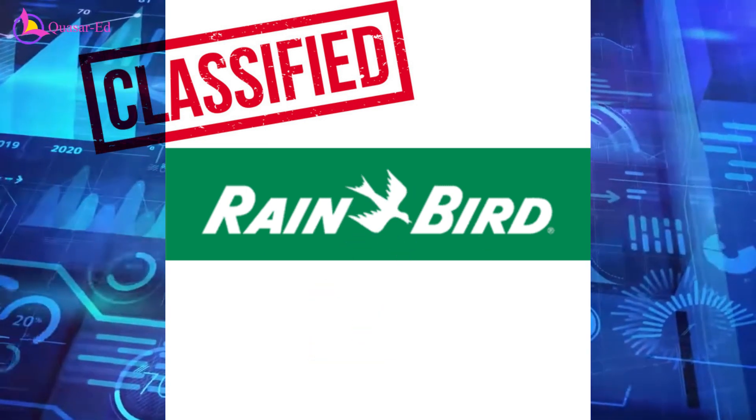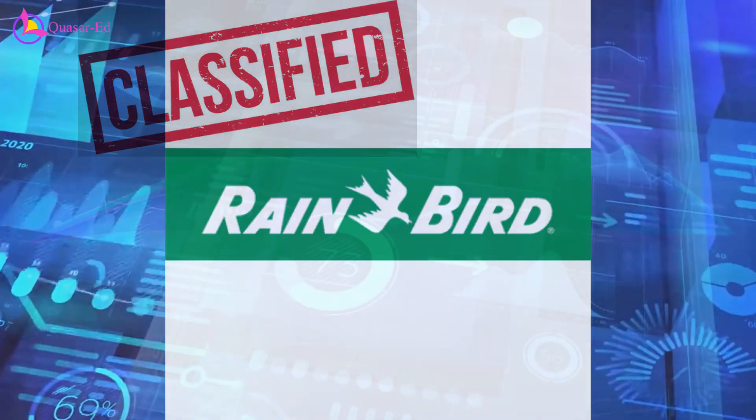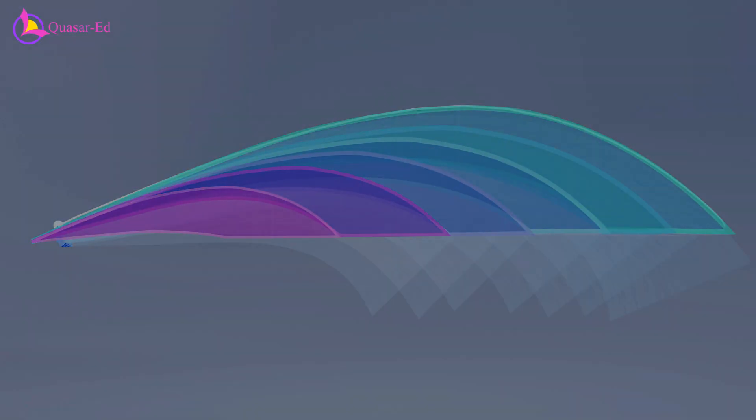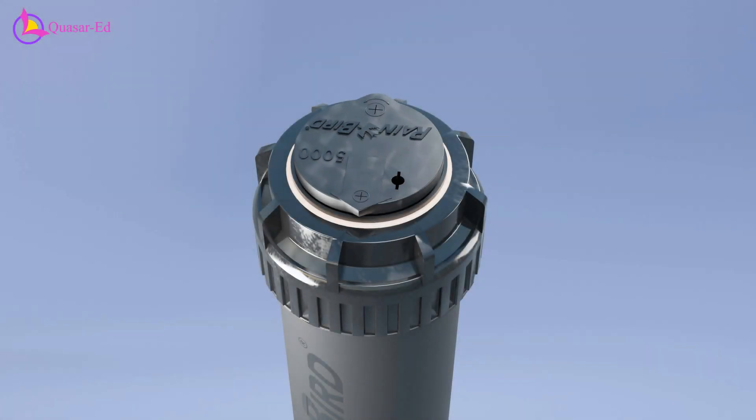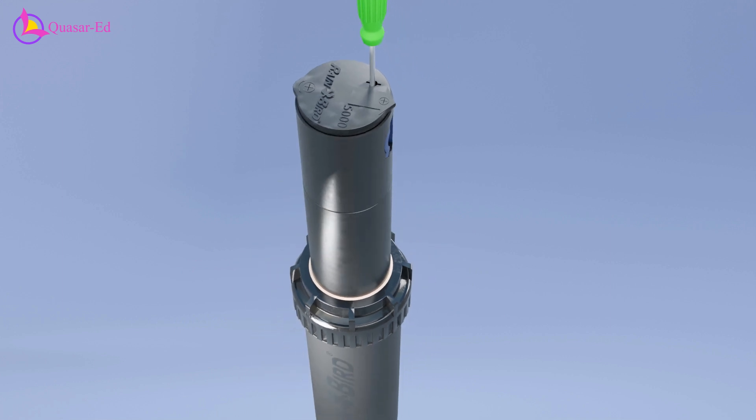Since we're not researchers or competitors of Rainbird, let's be content with this explanation of how rain curtain nozzles work. Finally, to adjust the initial direction of the nozzle, use this type of screw to pull out the stem and rotate it freely before releasing it back.